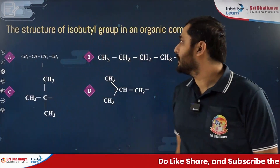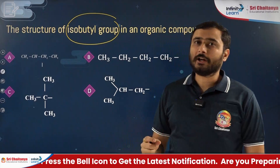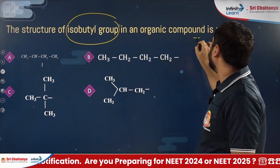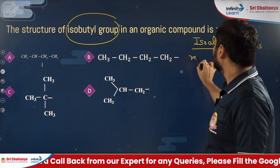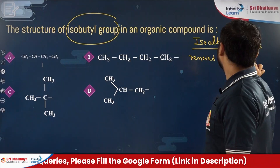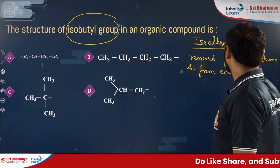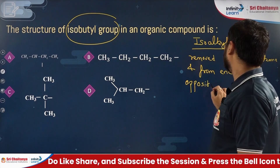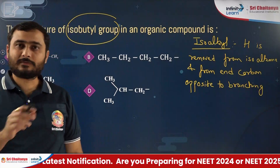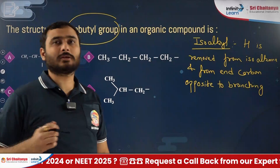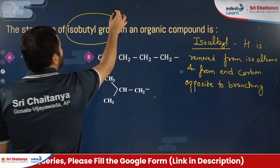Next is a question about common names — the structure of isobutyl. For an iso alkyl group, hydrogen is removed from the end carbon opposite to the branching. To draw isobutyl, first draw isobutane, then remove hydrogen from the end carbon opposite to the branching. Similarly for isopentyl, first draw isopentane.